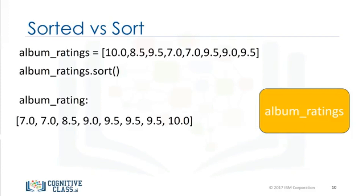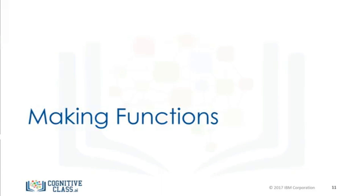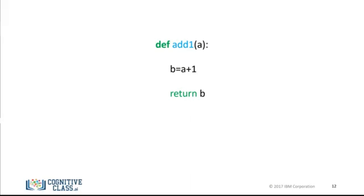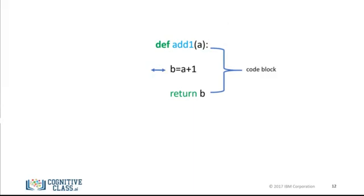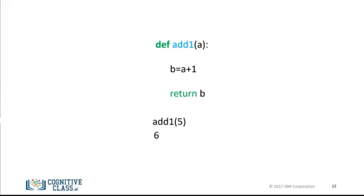Now that we've gone over how to use functions in Python, let's see how to build our own functions. This is an example of a function in Python that returns its input value plus 1. To define a function, we start with the keyword def. The name of the function should be descriptive of what it does. We have the function formal parameter a in parentheses, followed by a colon. We have a code block with an indent. In this case, we add 1 to a and assign it to b, then return the value for b. After we define the function, we can call it. The function will add 1 to 5 and return a 6. We can call the function again, this time assign it to the variable c. The value for c is 11.